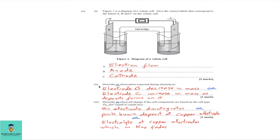C part two: describe an observation expected during electrolysis. There are several possible observations; only one is required. Electrode B will decrease in mass, or electrode C will increase in mass as a deposit forms on it. You can describe either a decrease or an increase in mass.